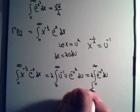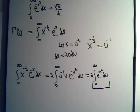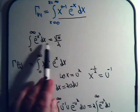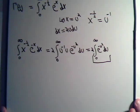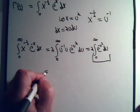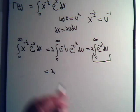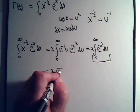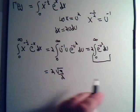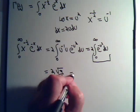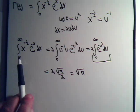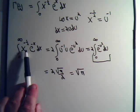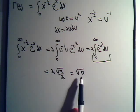We know what this is from up here — it's the same integral. So this then equals 2 times the square root of pi over 2, which is what this integral equals. That equals the square root of pi.